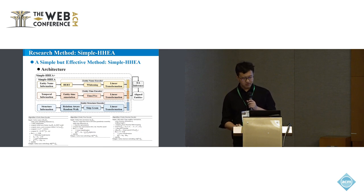For entity name modeling, it adopts BERT with whitening strategy and linear transformation to obtain entity name embedding. For entity time modeling, it first announces the relevant time point of a specific entity and adopts Time2Vec with linear layer to get time embedding. For entity structure modeling, we call it Simple HHEA+. It adopts relation-aware random walk to balance the breadth and depth of sample paths, and adopts skip-gram with linear layer to get structure embedding. Finally, feature fusion is adopted to get the final entity embedding.